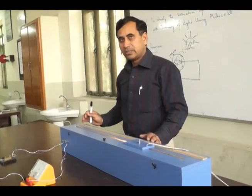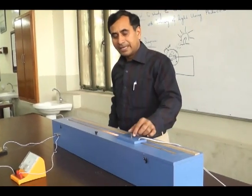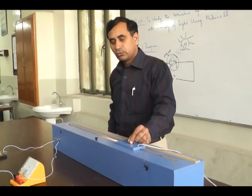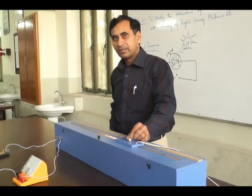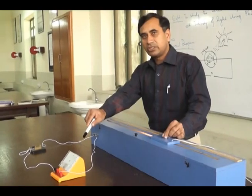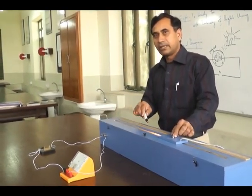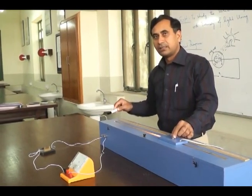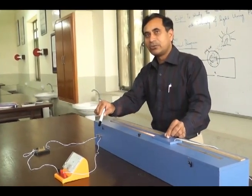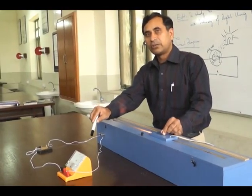Now students, you will see the procedure — how we will perform this experiment. We will turn on the electric lamp and then move it slowly towards the photocell. You can see the reading in the microammeter is changing. As you decrease the distance of the electric lamp from the photocell, the magnitude of the electric current increases, and you can observe this on the microammeter reading.